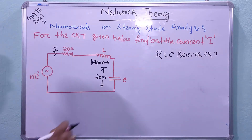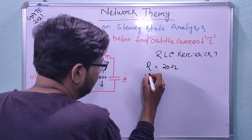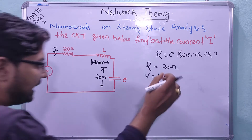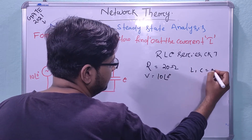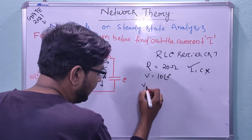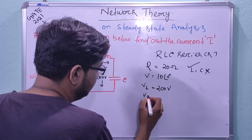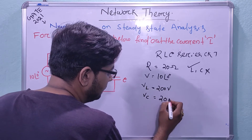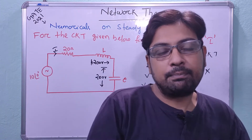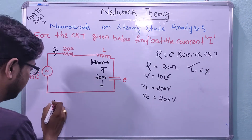Given data for the R-L-C series circuit: R = 20 Ω, V = 10∠0°. The values of L and C are not given, but VL = 200 V and VC = 200 V are given. Referring to the previous lecture, there are three conditions for an R-L-C series circuit.